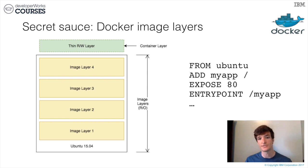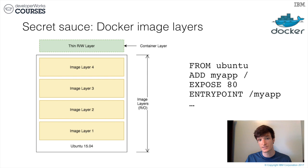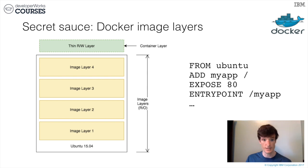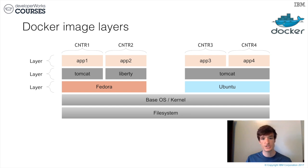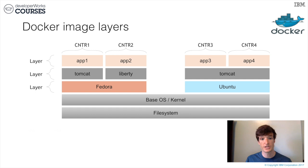Docker image layers are read-only. Whenever you create a container, it creates a thin read-write layer on top of this stack. This allows us to reuse image layers across multiple instances of the same container, and across many different images that share the same base image layers. For example, in this diagram, Application 1 and Application 2 both use the Fedora image layer, but only one copy of that Fedora layer needs to be stored on the host. Application 3 and Application 4 both use Tomcat and Ubuntu layers, but again only one copy is stored locally.